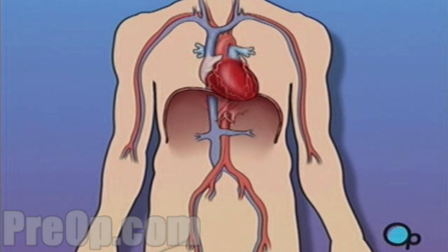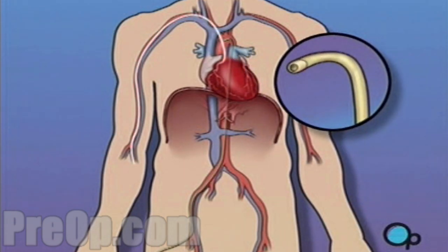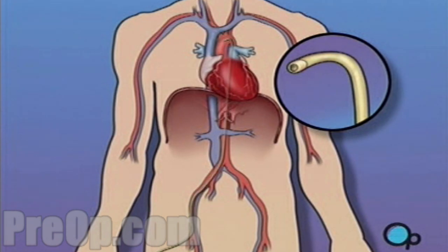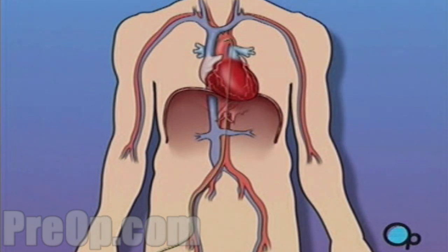During a balloon angioplasty, a heart specialist will insert a thin tube into an artery in your arm or leg and gently guide it towards the problem area in your heart. Once the tube is in place,